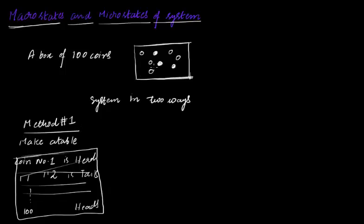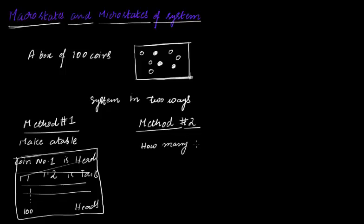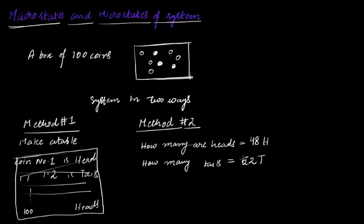But what other way can you describe this entire system without making this big table? Method two seems to be a little more easy, especially when you have a giant number of coins and it's very difficult to make these tables. Method two is: you can simply tell me how many coins are heads — let's say 48 of them are heads — and how many are tails — so 52 of them are tails. The total heads plus tails equals 100 coins in the box.